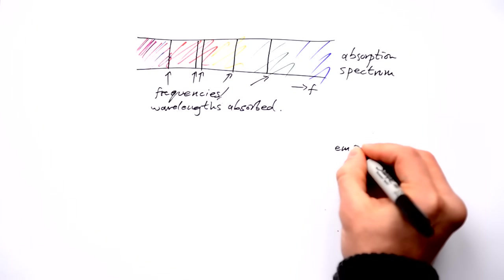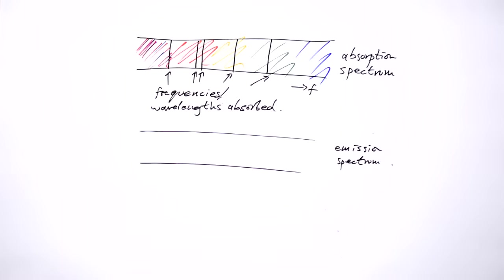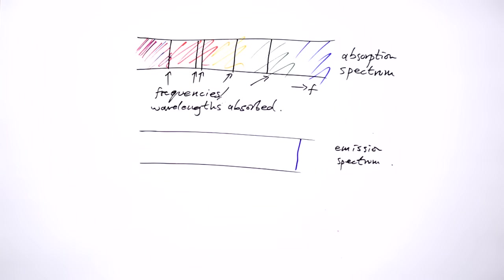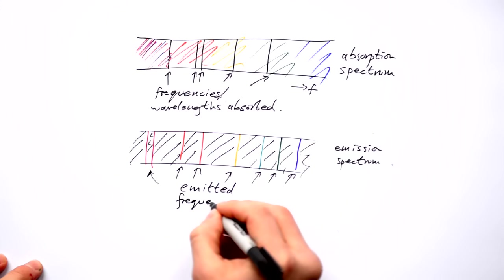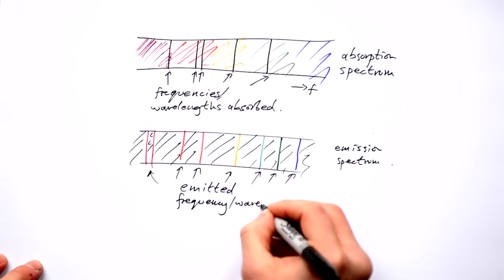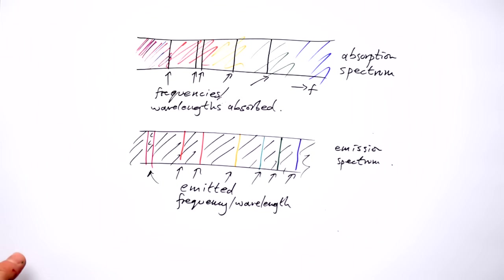We also have an emission spectrum as well. Other way around this time, the whole thing will be black apart from a few colored lines that show what frequencies and wavelengths are emitted from something.